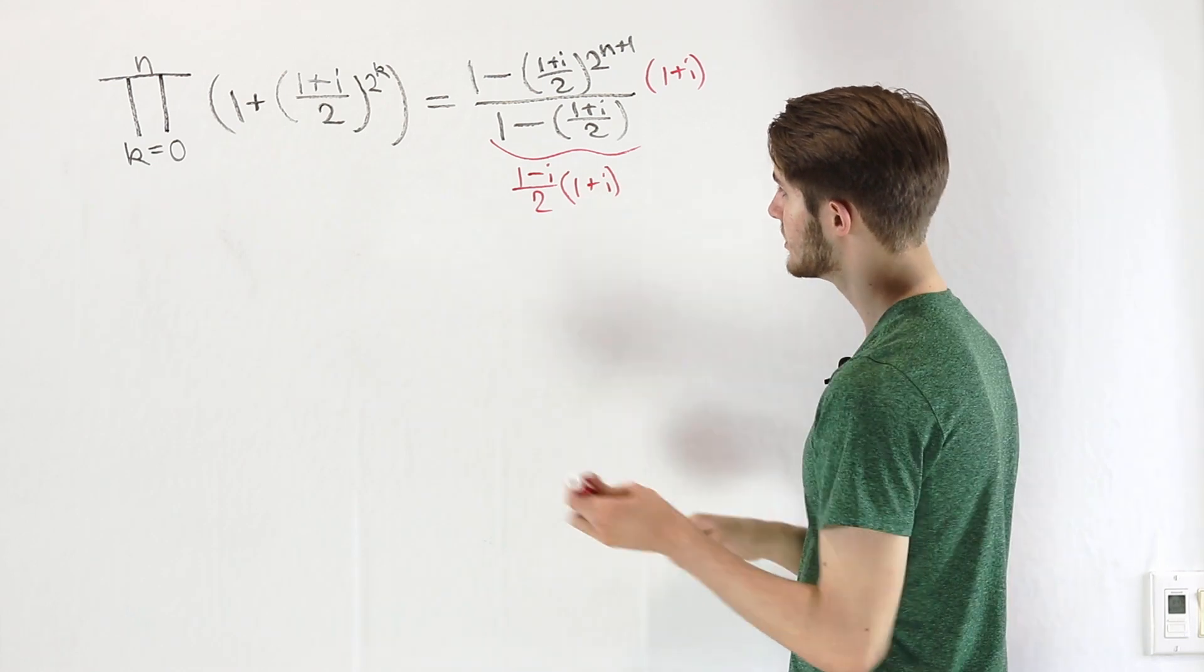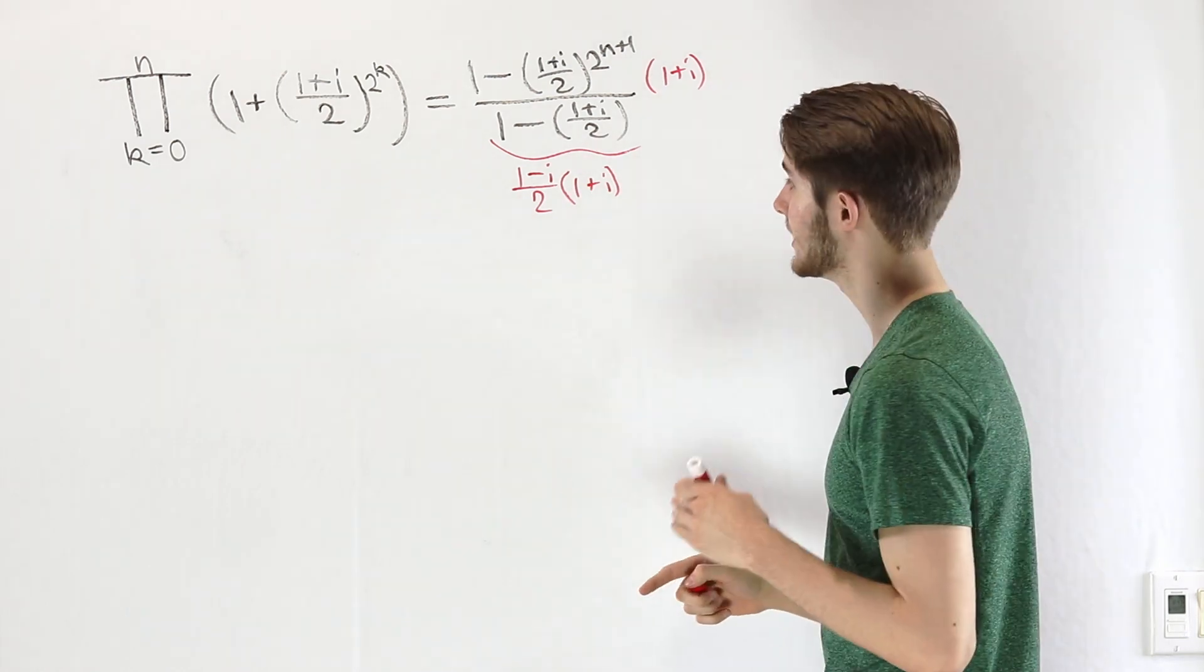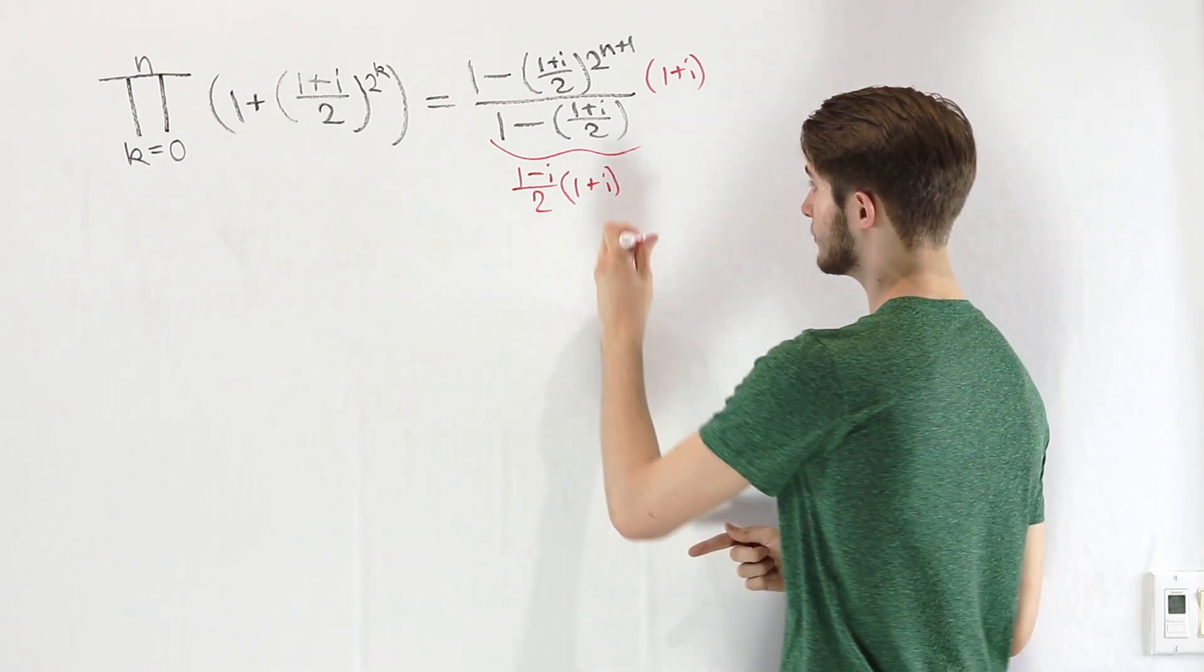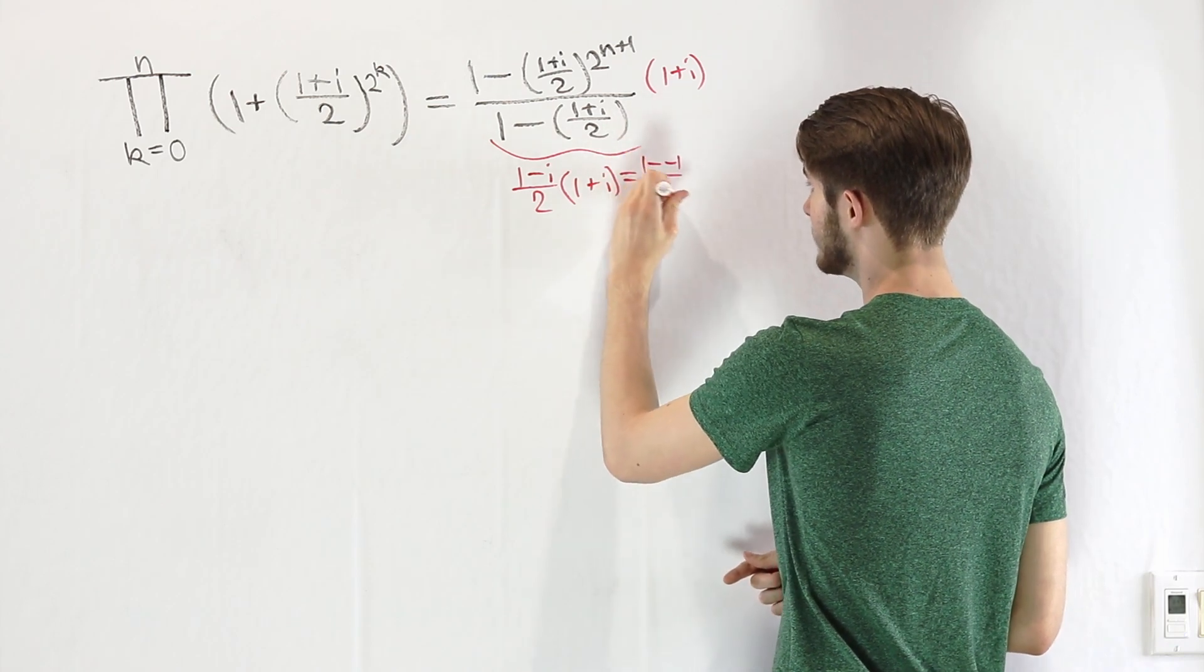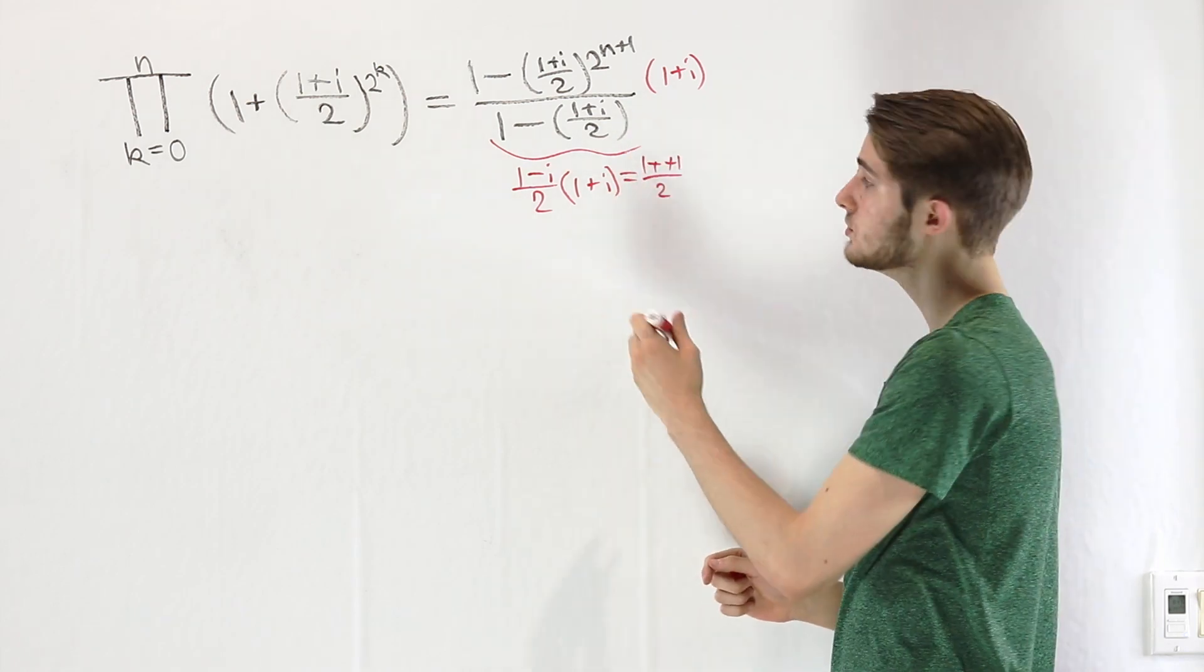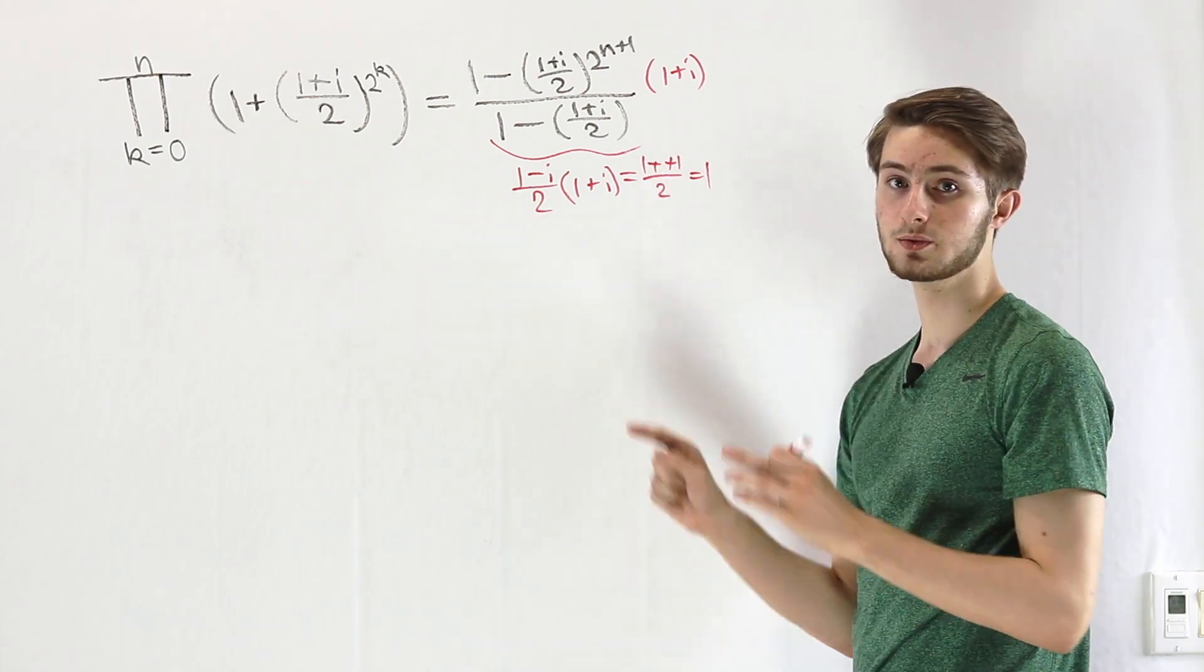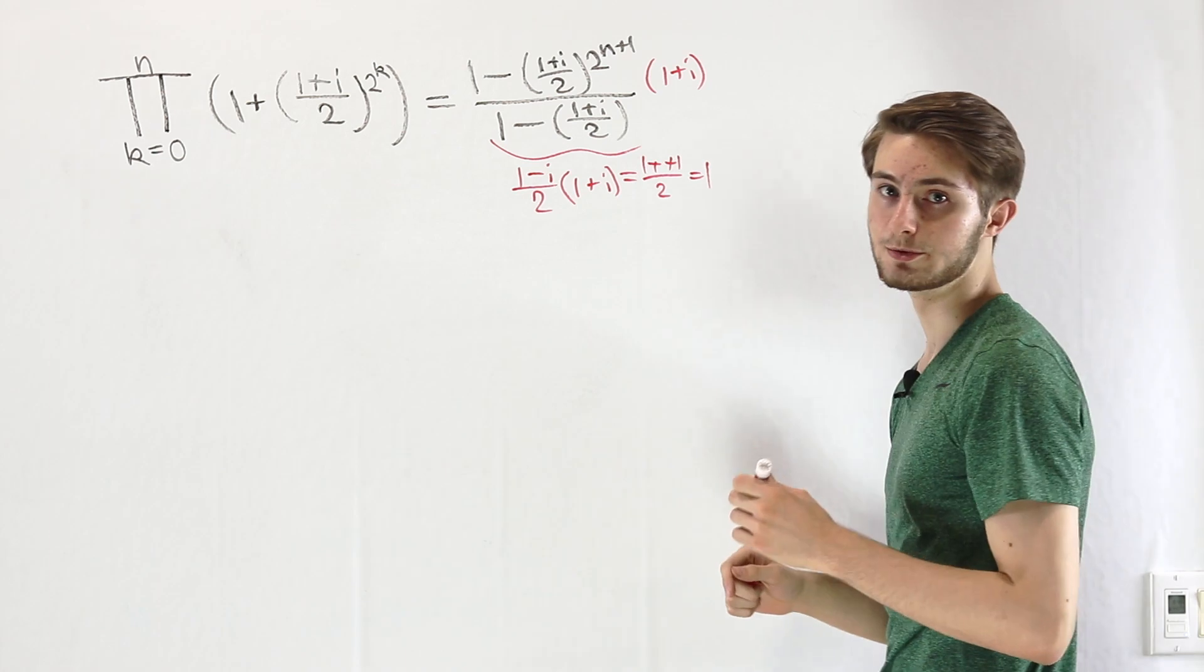If we do this multiplication, (1 - i)(1 + i), that's a difference of squares. We get 1 - i^2. Since i^2 is negative 1, this is 1 - (-1) over 2. 1 - (-1) is the same as 1 + 1, so that's 2/2, which is just 1. So our denominator becomes 1, which means we don't have to worry about it at all. We just have what's in the numerator here.